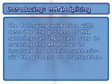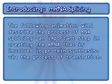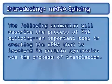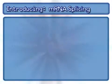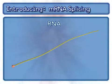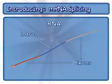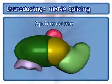The following animation will describe the process of RNA splicing, an important step in creating the mRNA that is involved in protein synthesis via the process of translation. Key factors in this process include RNA possessing introns and exons, and the spliceosome.